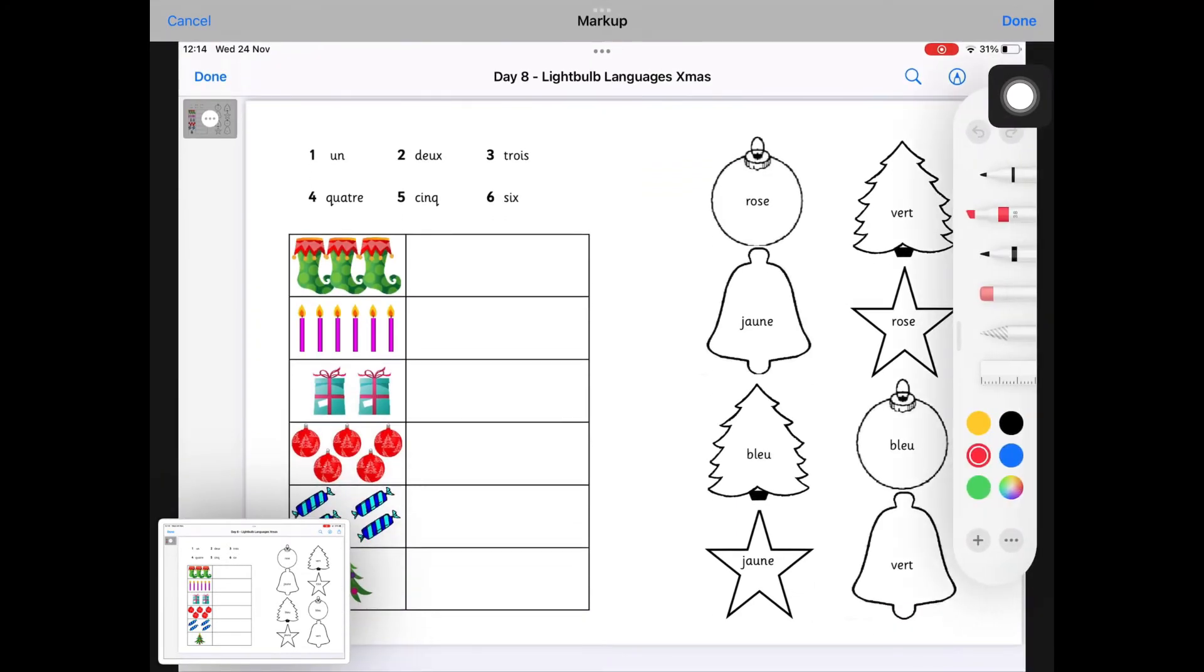On the left you've got to count the objects and write the words in French and on the right hand side you've got to colour in the shapes looking at the French word to tell you what colour it's going to be.